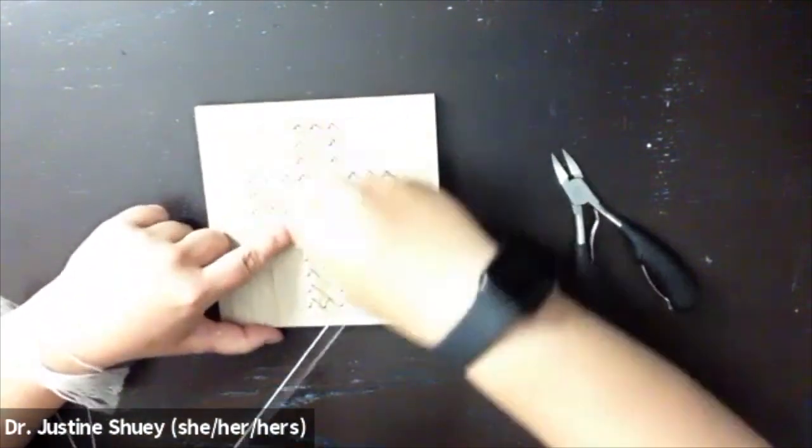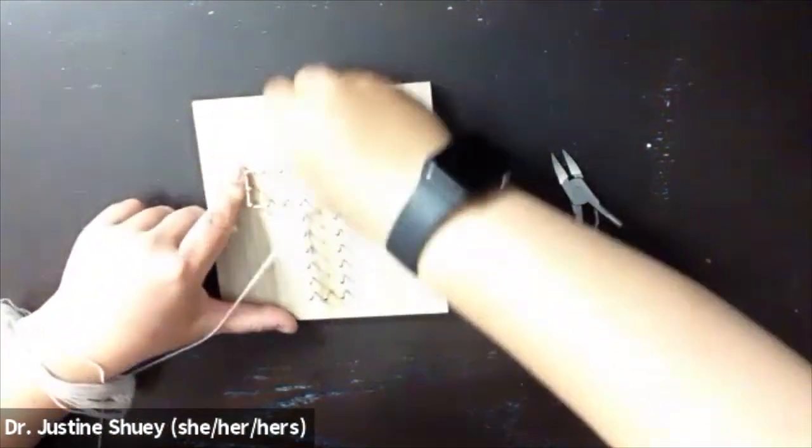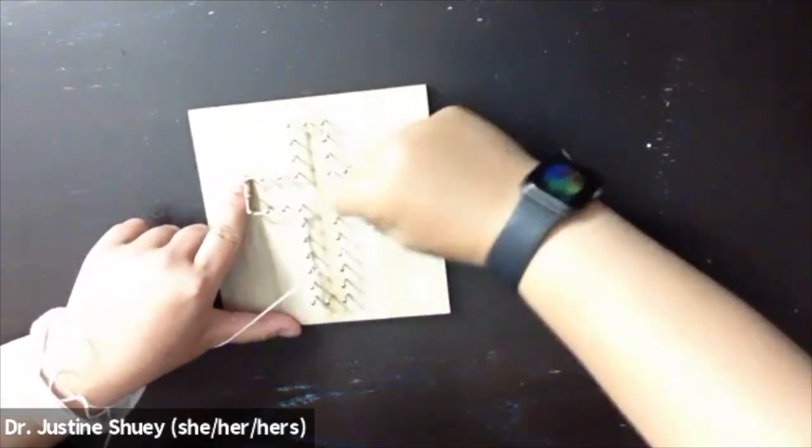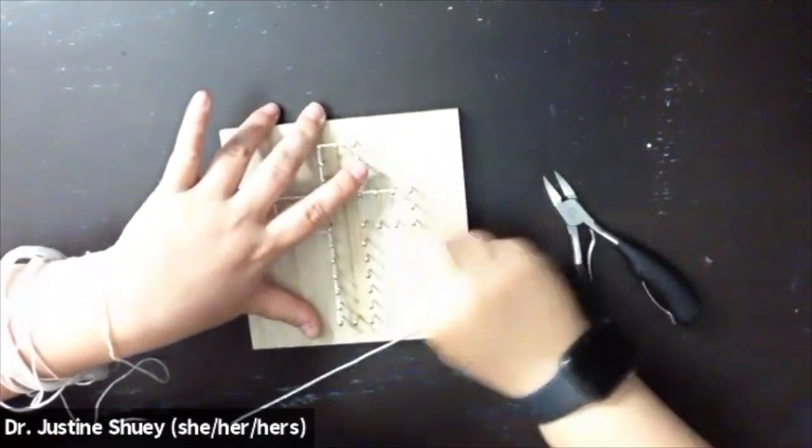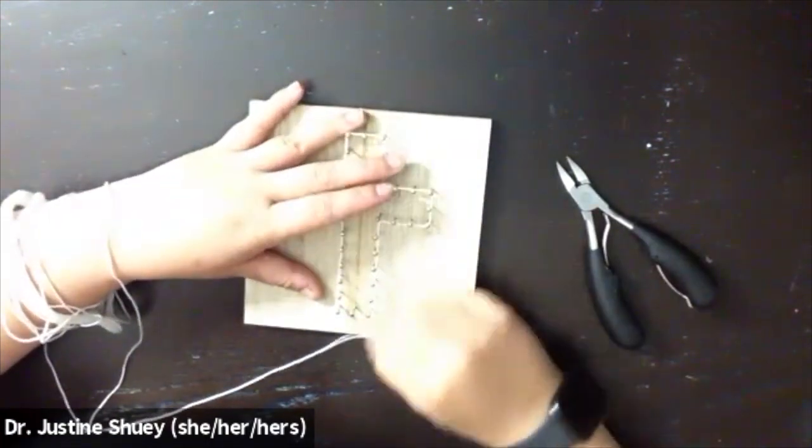So the first thing you're going to want to do is pick a nail. You're going to tie a double knot on that nail. Then you're going to start wrapping your string around each individual nail.